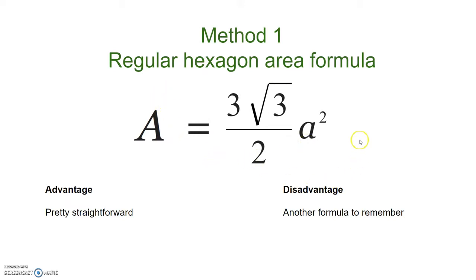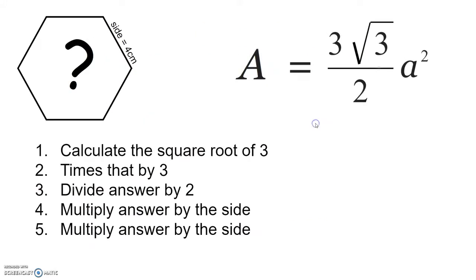And all you need to do is you get the square root of 3, multiply it by 3, divide that answer by 2, and then multiply it by that length of the side squared. Okay, which probably sounds a bit complicated, but let's talk you through it.